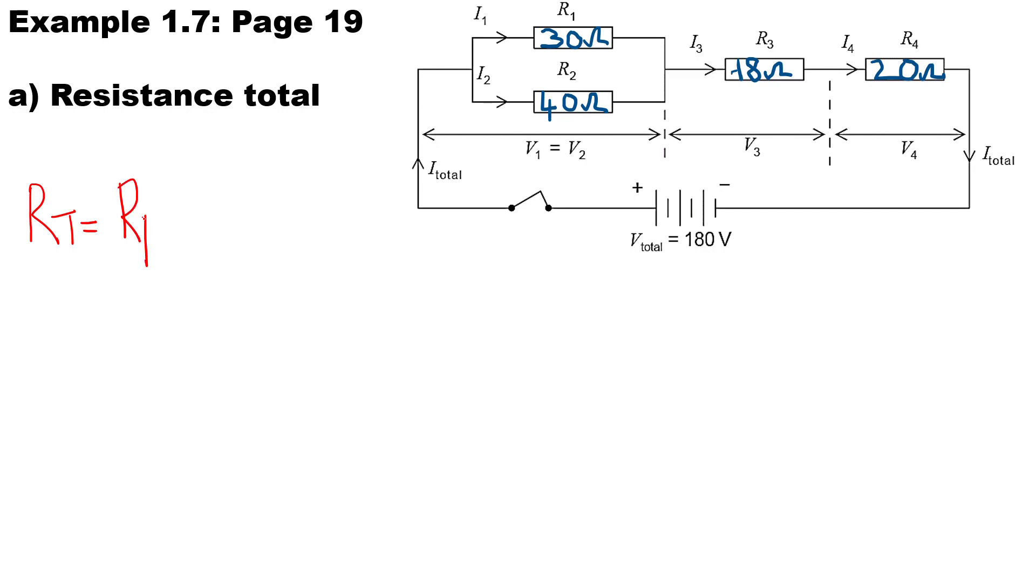Now there are two methods to calculate resistors in parallel, but I just use the same method regardless of the number of resistors in parallel. So we could say 1 over R1 plus 1 over R2, all to the power of minus 1 so that we can invert the answer, and then we add the resistors in series, which is R3 and R4.